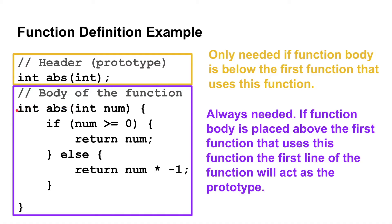Here is the body of the function — it includes that header, but now you are naming what the parameter is called. Right now we only have one parameter in the formal parameter list; you can have zero or more. Then we have some logic: if the number is positive or equal to zero, we return the number; otherwise, we know it's negative, so we multiply it by negative one and return that to give the absolute value.